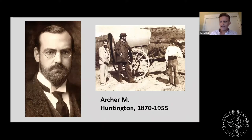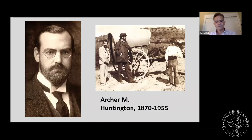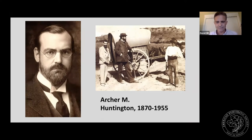Huntington was a wealthy railroad heir who became the society's president in 1905. His wealth brought stability to the society and allowed it to achieve goals that had eluded it in the past. Early in life he developed an obsession with medieval and modern Spain — he's seen here on his first trip to Spain in 1892, making him about 22 years old. Eventually he built a large collection of books, paintings, and coins relating to the Iberian Peninsula and its offshoots.